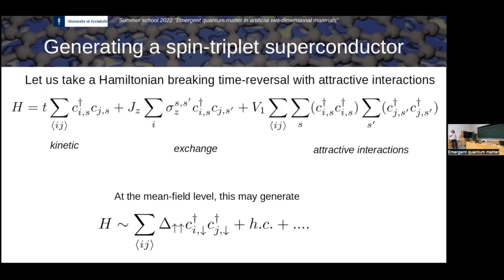Let's look at a minimal example for getting unconventional, specifically spin triplet, superconductivity. We take a ferromagnetic metal — one where up and down electrons are inequivalent and there is an exchange field. You can generate this by taking a 2D material and applying an in-plane magnetic field coupling to the Zeeman field, or by placing it on top of a 2D ferromagnet that creates an exchange field via proximity. The Hamiltonian includes kinetic energy, exchange energy (the Zeeman or exchange coupling), and attractive first-neighbor interactions.